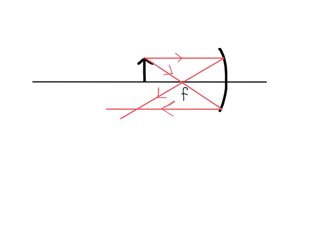And the image is going to be located where these lines intersect. This is going to represent the top of the image so that would be the point of the arrow so I can draw that in just like that. Now we can calculate how far this image is away from the mirror and we can also calculate how tall this image is using the mirror equation.